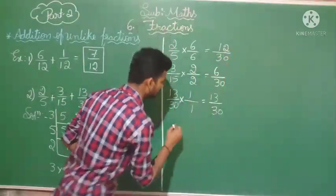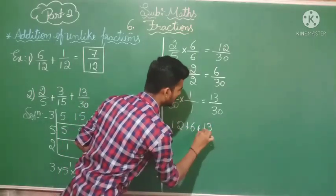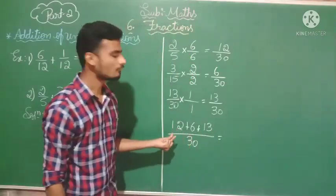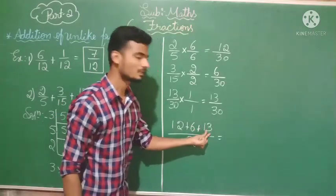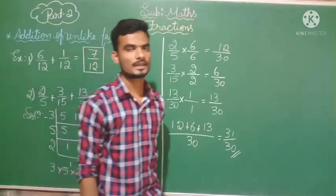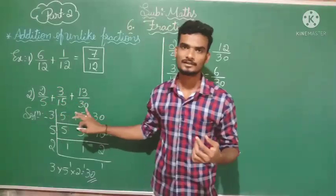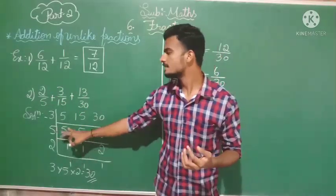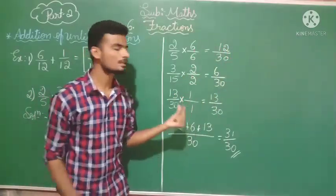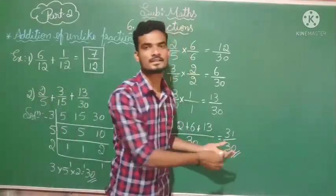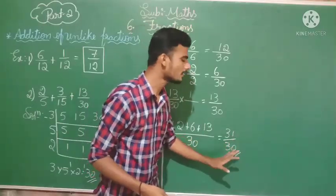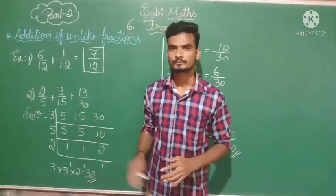Now we add the like fractions. 12 plus 6 plus 13 over 30. 12 plus 6 is 18; 18 plus 13 is 31. So the answer is 31/30. If the fraction can be reduced to simplest form, reduce it; here it cannot, so the answer is 31/30. This is how you add unlike fractions.